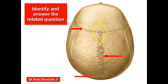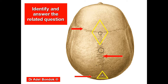The anterior fontanelle ossifies at the 18th month — one and a half years. This area is called lambda. In the newborn skull it is the posterior fontanelle, which ossifies at the age of six months. The anterior fontanelle is diamond-shaped; the posterior fontanelle is triangular.